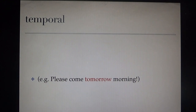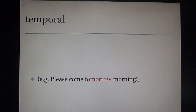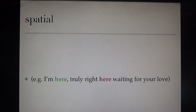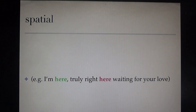For temporal deixis, the example is 'tomorrow.' It is unclear because if you say it on Sunday, tomorrow means Monday; if you say it on Monday, tomorrow means Tuesday — it moves depending on when the speaker says it. For spatial deixis, 'I'm here' — here must be the place close to the speaker, but we don't know where the speaker's position is, so 'here' is a spatial deixis.